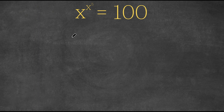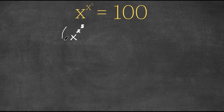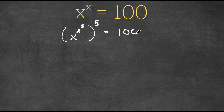What I'm first going to do is take both sides to the power of 5. So now we have x to the power of x to the power of 5, all to the power of 5, and this is equal to 100 to the power of 5.